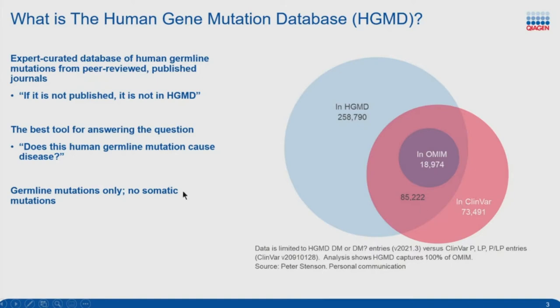This remaining 73,000 ClinVar entries are likely not in HGMD because ClinVar does not necessarily require users submitting their clinical assertions about a variant to have specific guidelines for evidence to support that assertion. HGMD also has a large amount of content not available in either OMIM or ClinVar. One thing to note is that HGMD is for germline mutations only, not somatic. So HGMD is a great tool when you're asking the question: does this human germline mutation cause disease?